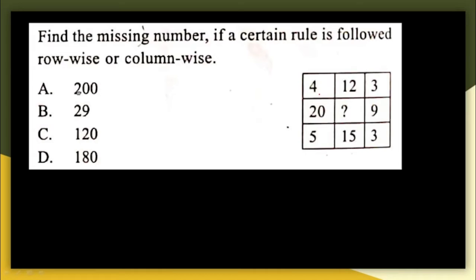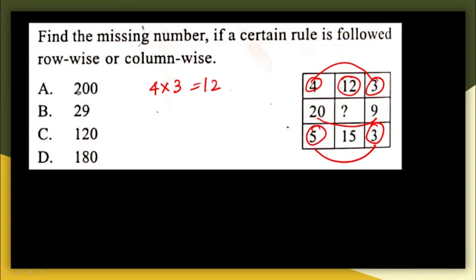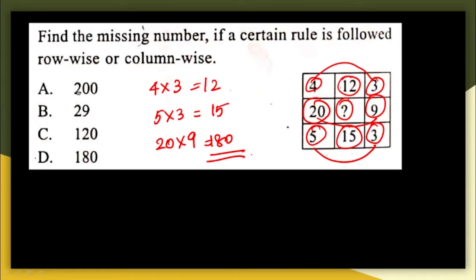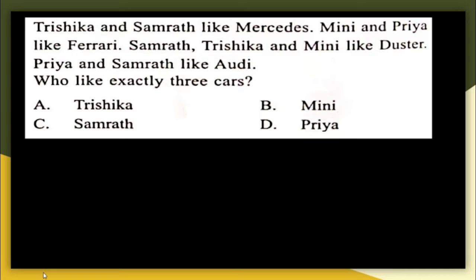Next question: find the missing number following a rule row-wise or column-wise. In the first row: 4 × 3 = 12. In the second row: 5 × 3 = 15. Following the same pattern, the missing number is 20 × 9 = 180. The correct answer is option D: 180.